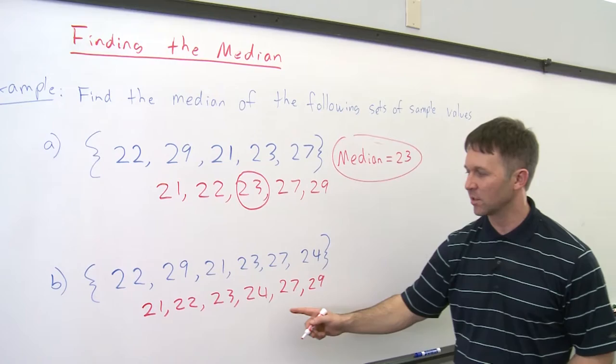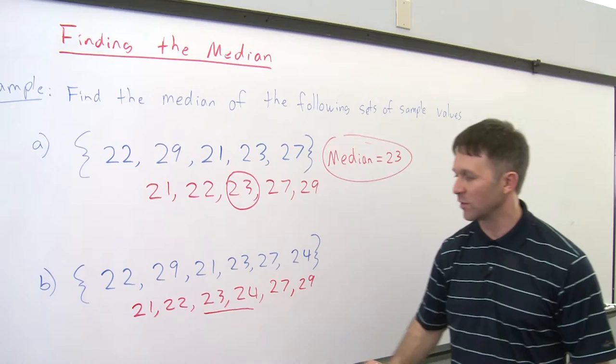Now in this case, we have an even number of values. So if there's an even number of values, we're going to take the two middle values. In this case, it's 23 and 24.